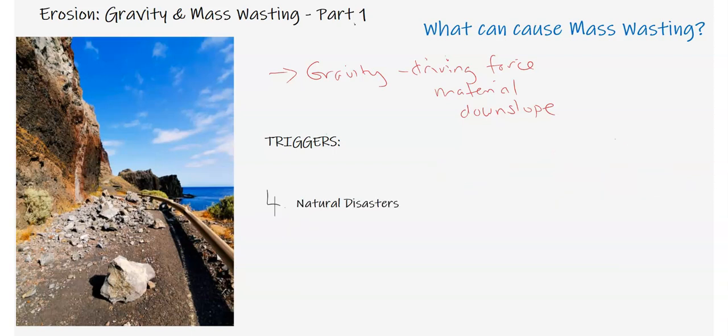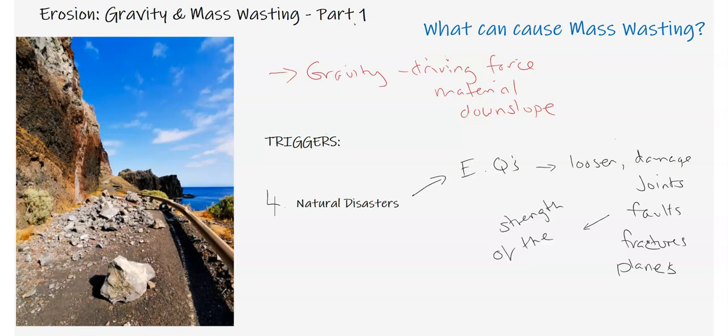Last one is natural disasters. So the main one that comes to mind is earthquakes. Now, the elastic and seismic energy going through the crust can loosen, can damage, create joints, create new faults and fractures, extensive fractures and various joints, and increase bedding planes to severely disrupt the strength of the slope. This can be very quick, but very, very devastating for the crust.